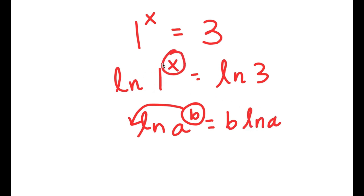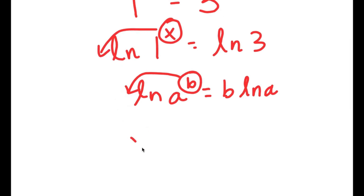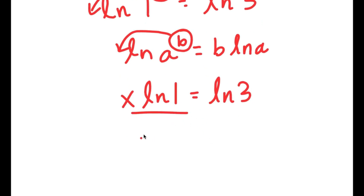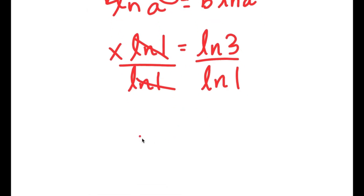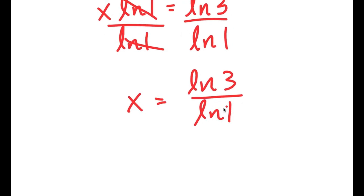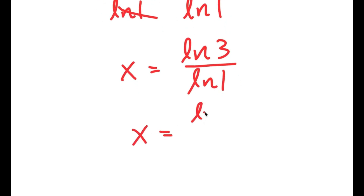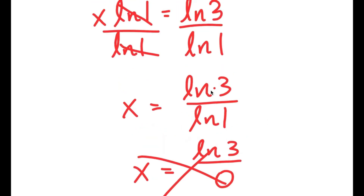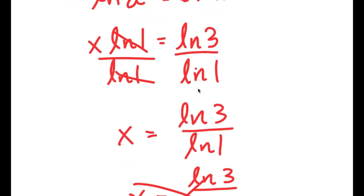In this case, I have ln 1 to the power of x, and I can move x to the front. So now I get x times ln 1 is equal to ln 3. If I divide both sides by ln 1, these two cancel out, and I get x is equal to ln 3 over ln 1. Now, ln 1 is equal to 0. So I get x is equal to ln 3 over 0, and you can't divide any number by 0 because that's undefined — meaning this has no solution. So that method doesn't work.